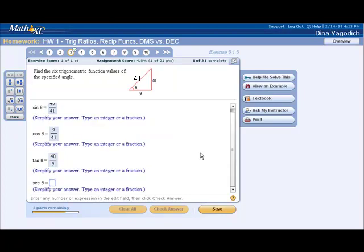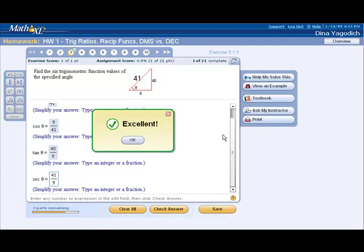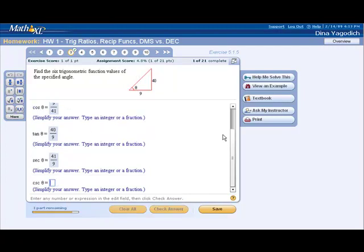The secant of theta, we remember secant is the reciprocal of cosine. So the secant of theta is equal to the hypotenuse, 41, divided by the adjacent side, or 9. And the cosecant and the cotangent are found in similar ways.